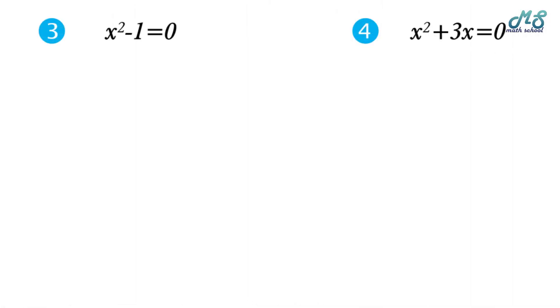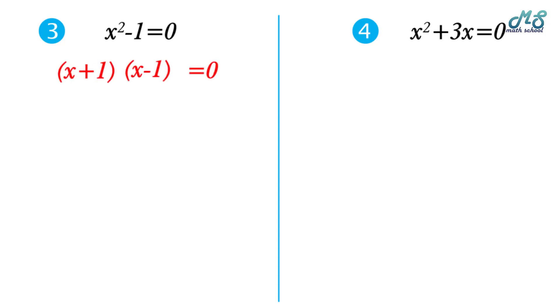Number three: x squared minus 1 equals zero. This is the difference of two squares. It factorizes as x plus 1 times x minus 1 equals zero. We can deduce that x equals negative 1 and x equals 1.